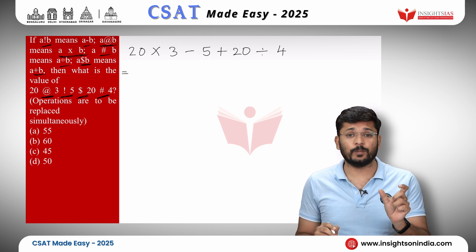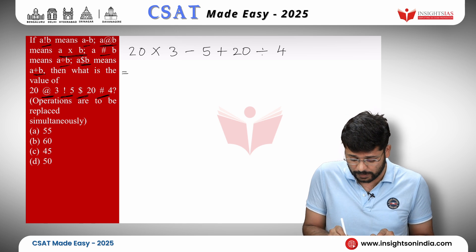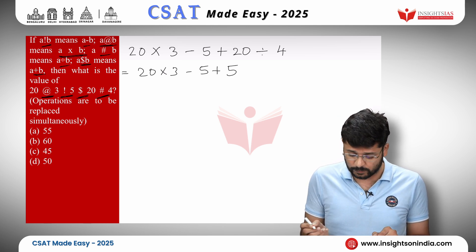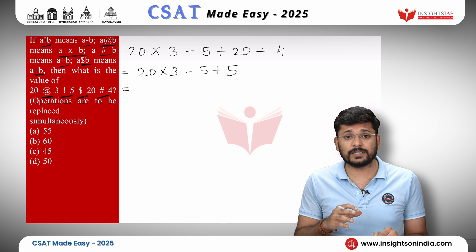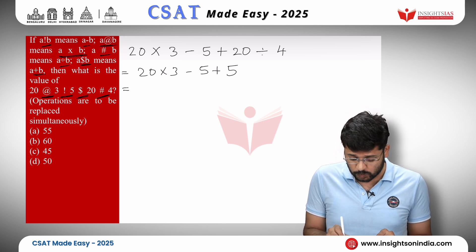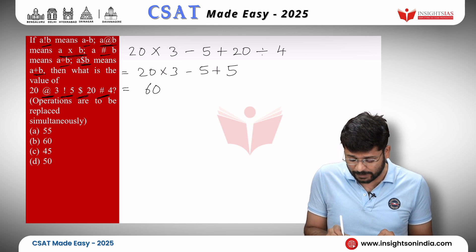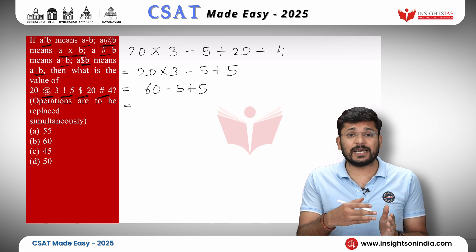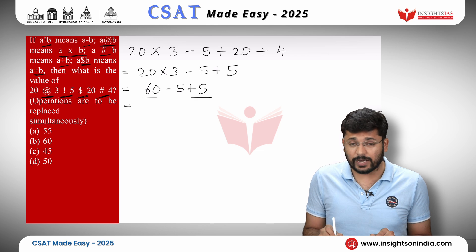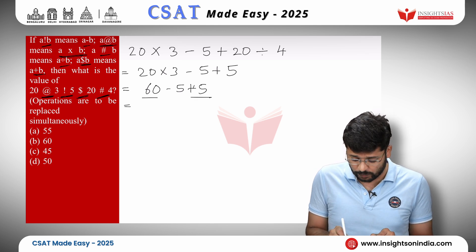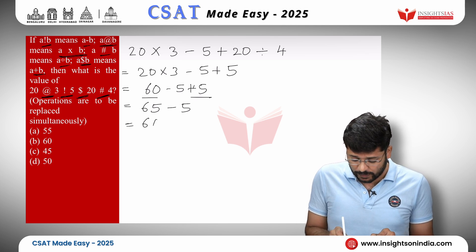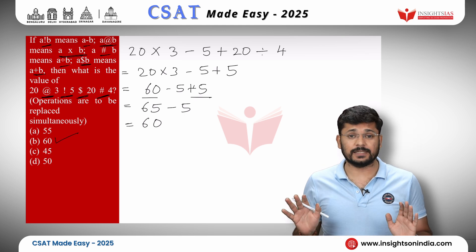There are four operations: into, minus, plus, and divide by. By BODMAS, division comes first — 20 divided by 4 gives 5. Then multiplication: 20 into 3 gives 60 minus 5 plus 5. Then addition: 60 plus 5 gives 65 minus 5. Finally subtraction: 65 minus 5 gives 60. The answer is 60.